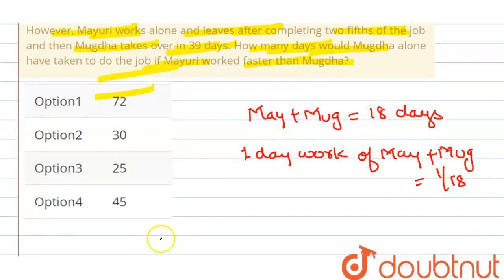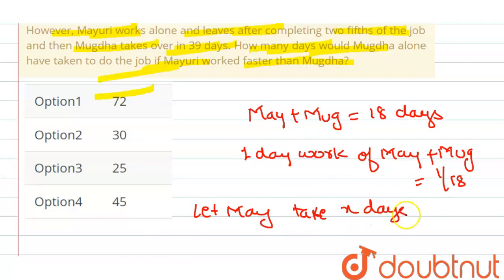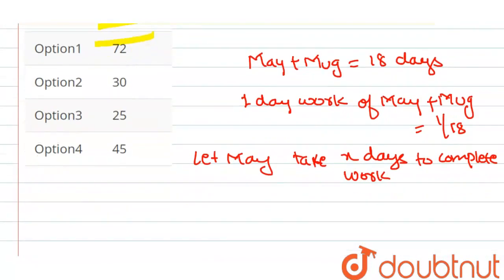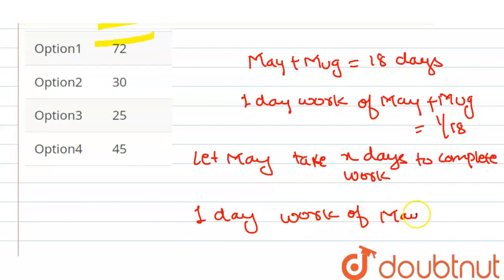ये चीज़ clear होगी आपको। Now, let करते हैं — let Mayuri take X days to complete the work, okay? Mayuri को मान लेते हैं X days लगते हैं work complete करने के लिए। तो Mayuri का 1 day work क्या हो जाएगा? 1 day work of Mayuri ये value आएगी हमारी 1/X के equal.